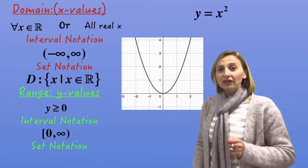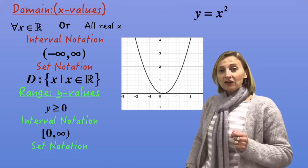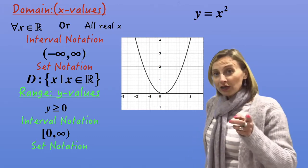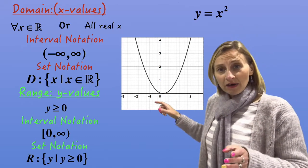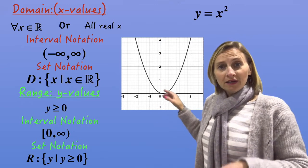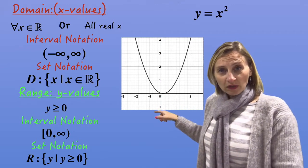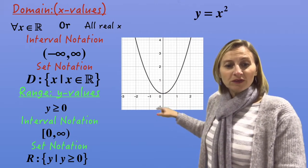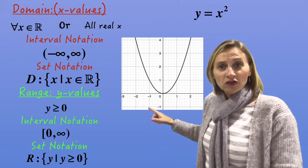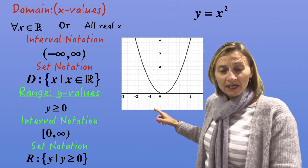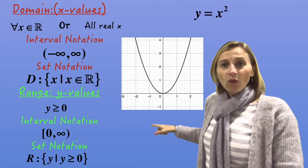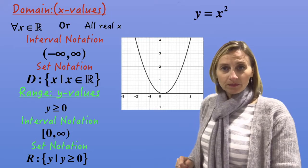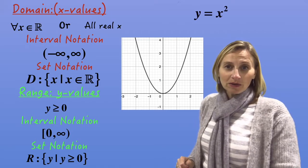Now let's take a look at set notation — that's with the curly brackets. So we're going to do R colon curly brackets with range. So it's y such that — vertical line — y is greater than or equal to zero. And then close your curly brackets.